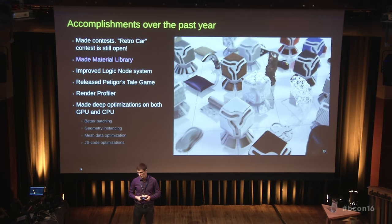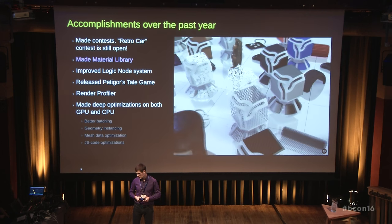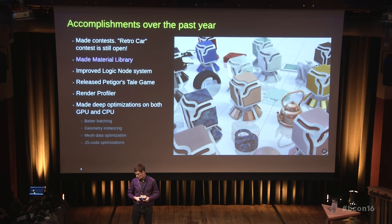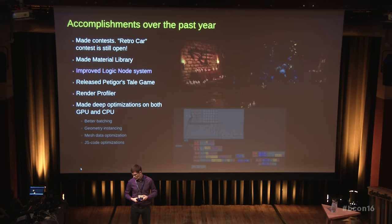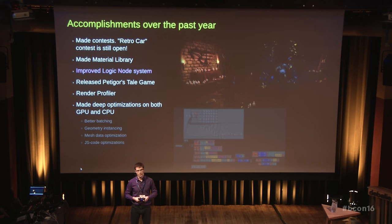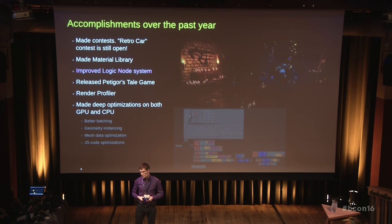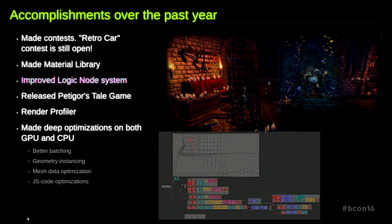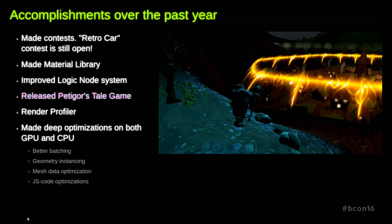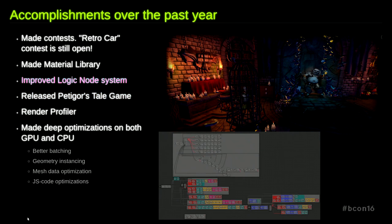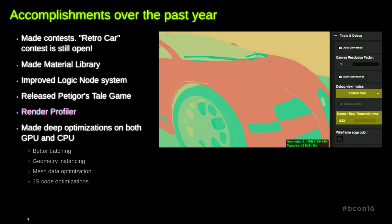This year we also started to fill our material library, and today we have around 30 realistic materials. We have improved our logic node system and added the possibility to make interactions between JavaScript and the logic node system. We are using it in development of our game called Tiger's Tale, which was released this year. We develop our logic node system in a workflow-oriented way, separating programmer work and game designer work.